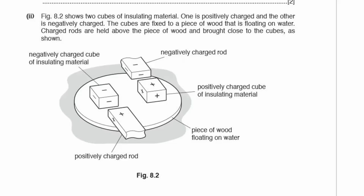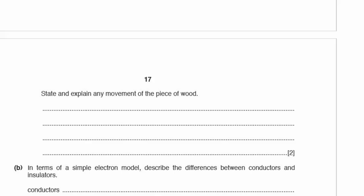Part A2: Figure 8.2 shows two cubes on the wood — one positively charged, one negatively charged — with charged rods brought close to each. One side attracts in one direction and the other side attracts in the opposite direction, creating a turning effect. The wood will spin or rotate because the two forces create a couple.